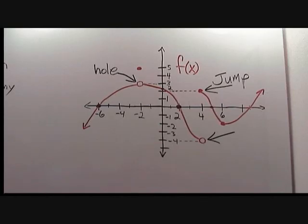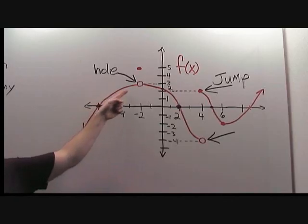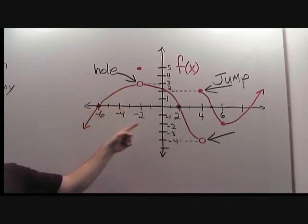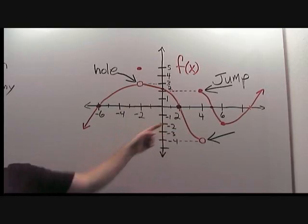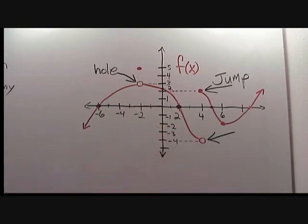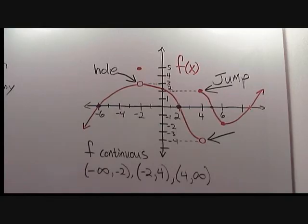Notice the way it is drawn, the function f is continuous at all other points except x equals negative 2 and x equals 4. Therefore, the intervals on which f is continuous are negative infinity to negative 2, negative 2 to 4, and 4 to infinity.